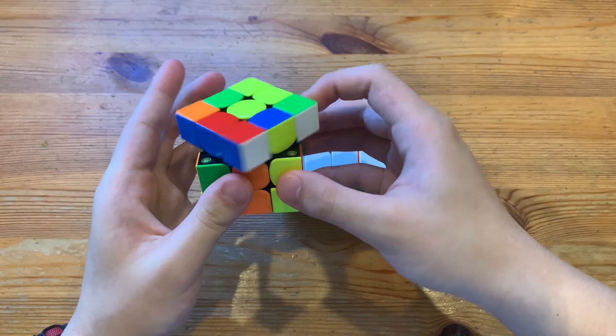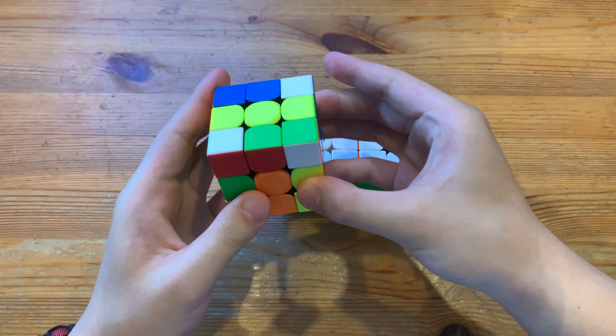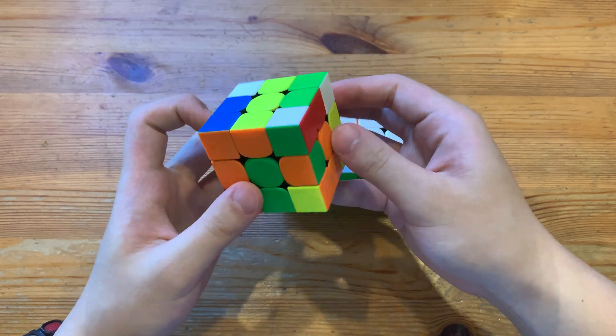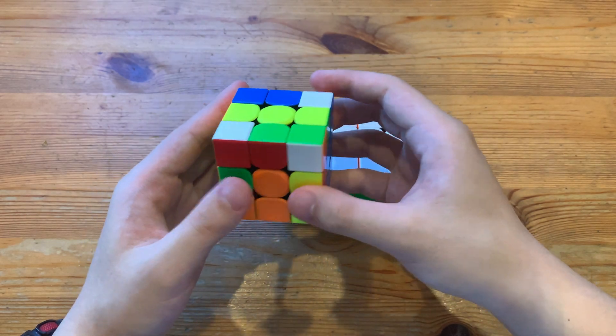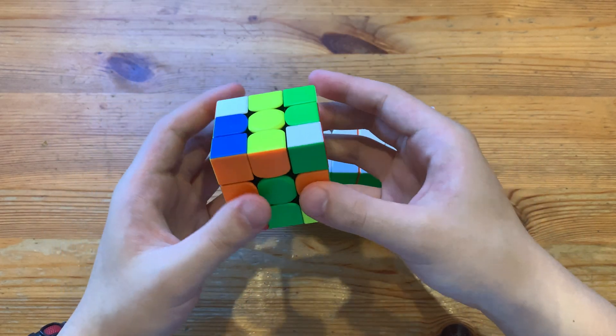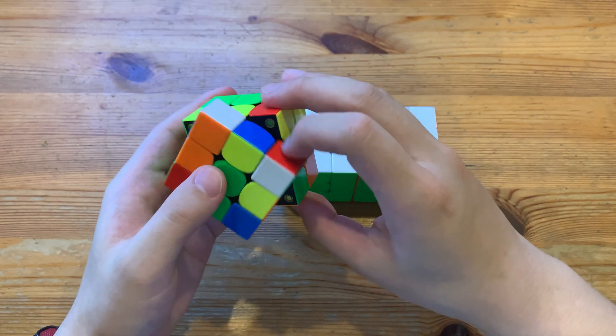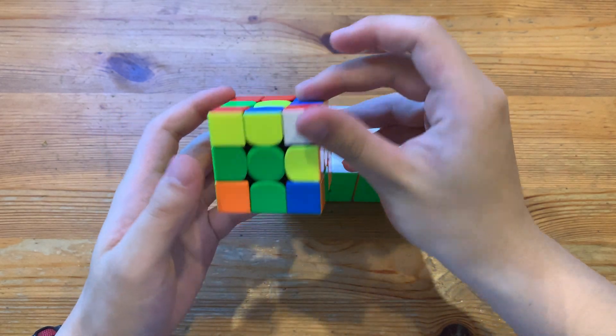And then I just insert this into the back, right? And then here, I'd probably just rotate because I see that this other pair would, the edge for the other pair is misoriented, so I'd probably just rotate here and do this 5 mover, like that.